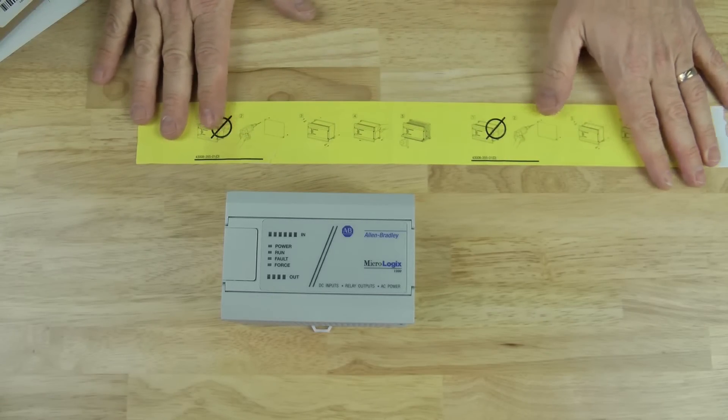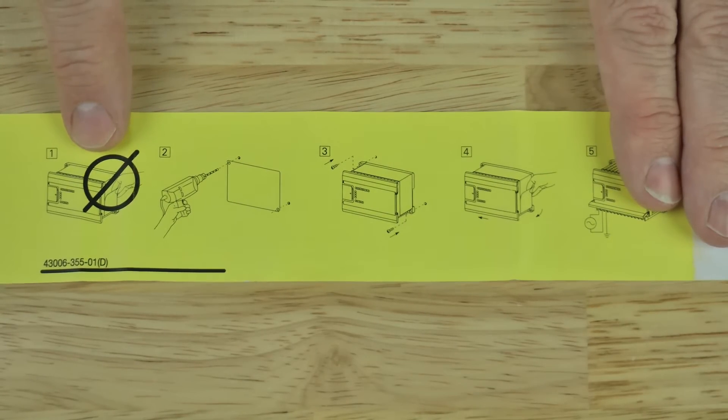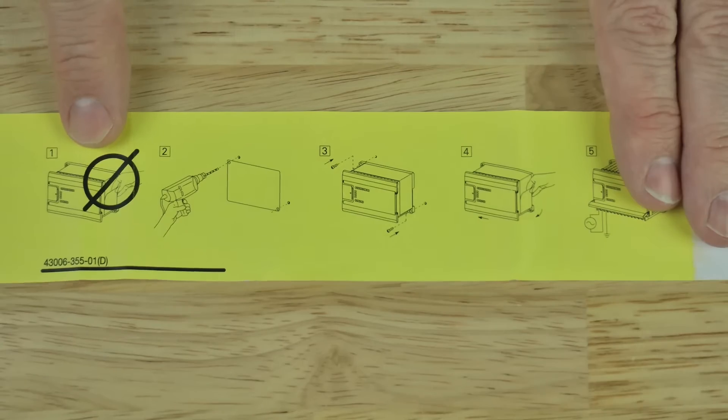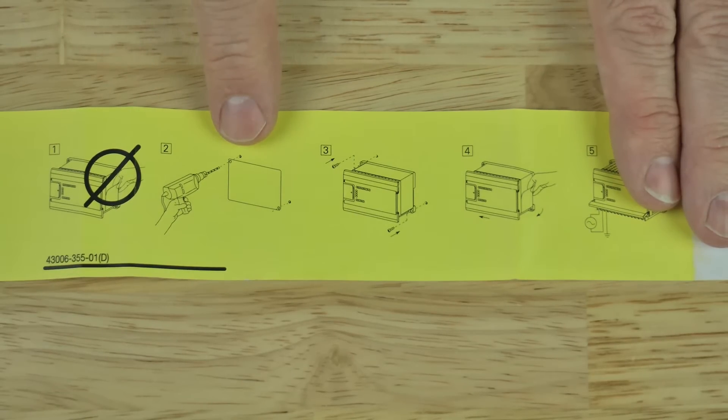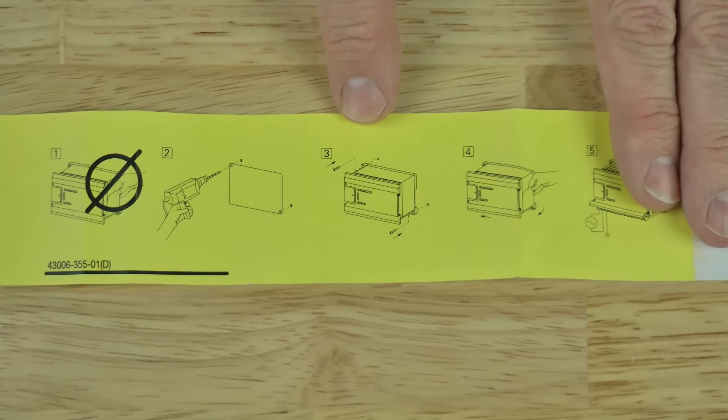Now let's put that aside and take a look at this yellow wrapper that it was wrapped in. If you look at it, you'll see there's some warnings on here. It says don't remove the wrapper like I just did. It said first drill your holes in your mounting surface, typically a back panel in an electrical enclosure, then install the MicroLogix.